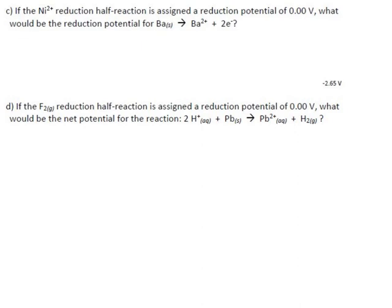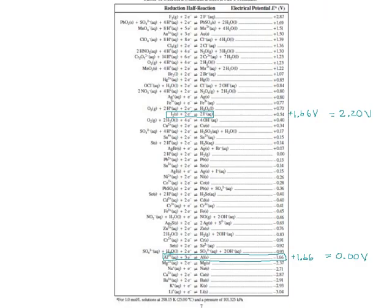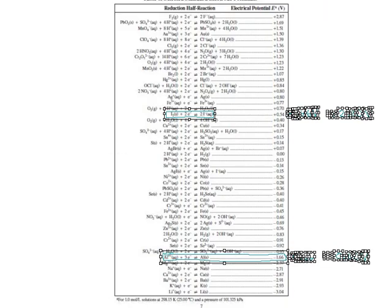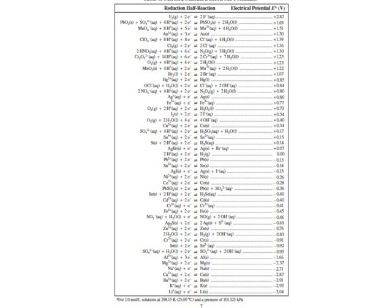A few more hypotheticals here. They said if the nickel reduction half reaction was assigned zero. So here's the table as it exists in our world. They're saying what if nickel, where is it, here we are, if this nickel reaction were our zero?